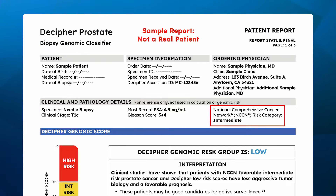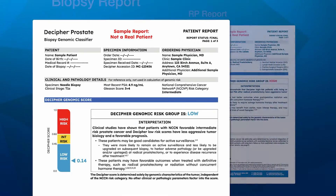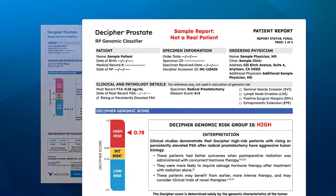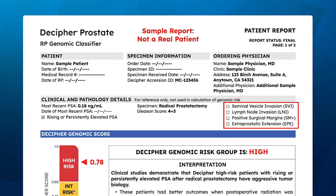The Decipher biopsy report will include the NCCN risk category, while a Decipher radical prostatectomy report will include pathological features from the surgical specimen, as well as the patient's most recent post-treatment PSA.